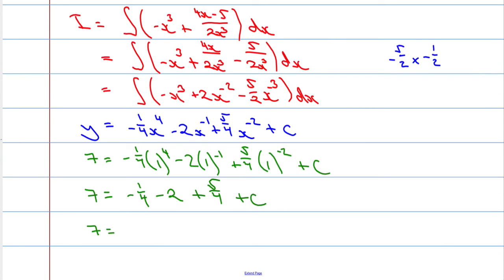So we get 7 equals negative 1 quarter plus 5 over 4 is going to be 4 over 4, which is 1. So negative 2 plus 1, negative 1. I need to add that c, which means that c equals adding 1 to both sides, we get 8. So c must equal 8.